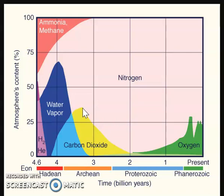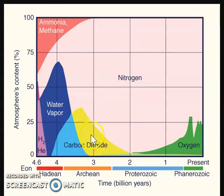Venus is a really good example of this. Venus does not have large bodies of water for carbon dioxide to absorb into, and so we have large amounts of carbon dioxide on Venus, which creates a very strong greenhouse effect.